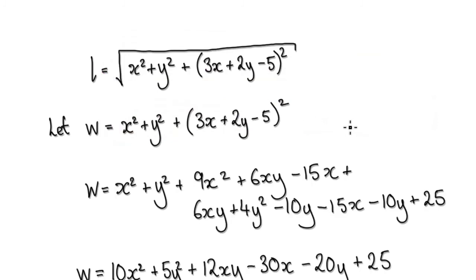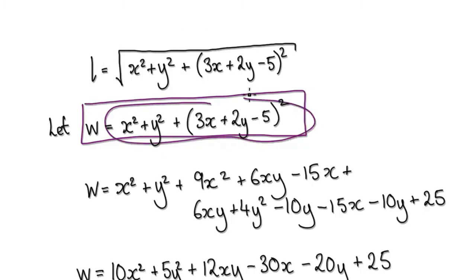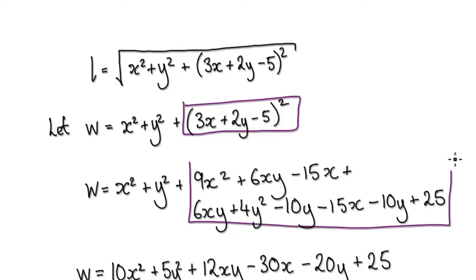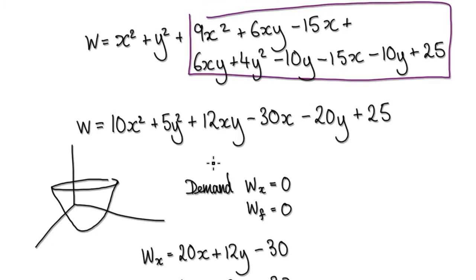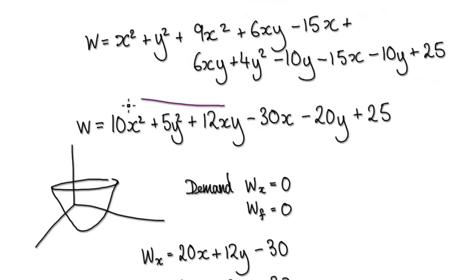Our job now is to find the lowest point — to minimize W. So we need to tidy this thing up: multiply the whole expression out, and then tidy up to get the simplified form of W. Remember, we're trying to minimize this whole thing.